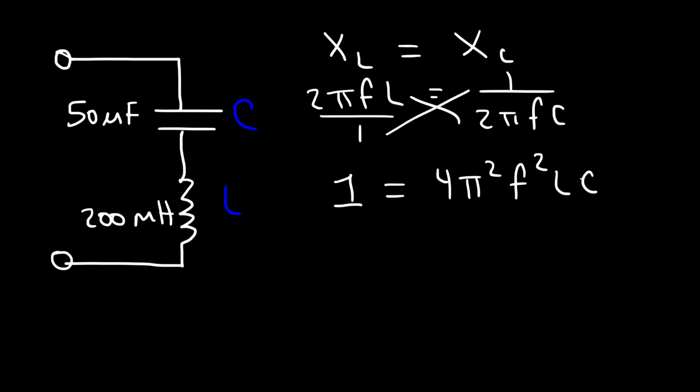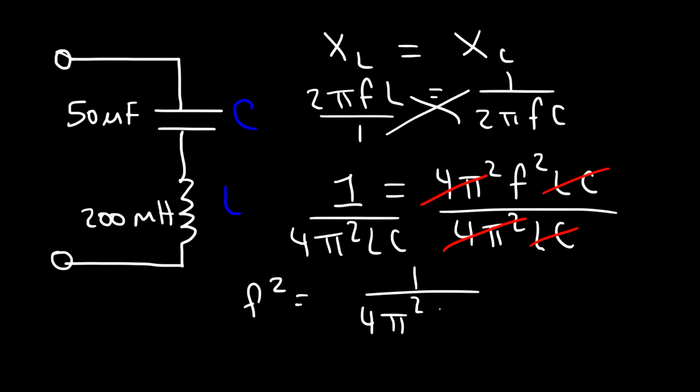Now I'm going to divide both sides by 4π²LC. These terms cancel on the right. So we can see that f² is equal to 1 over 4π²LC.